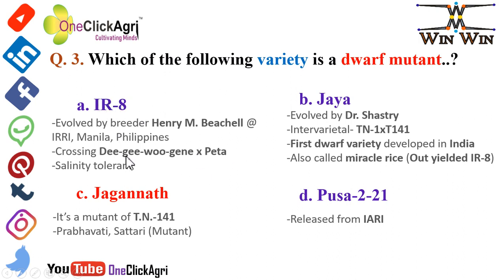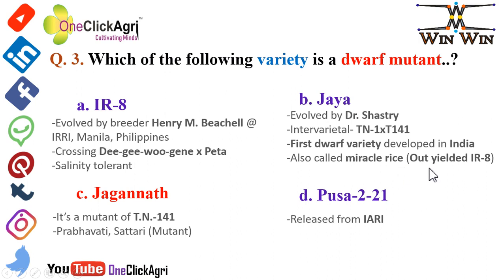IR8 variety of rice is salinity tolerant. The variety Jaya was evolved by Dr. Shastri, an Indian scientist. Jaya is an inter-varietal cross between TN1 into TN141, and it is the first dwarf variety developed in India. It is also known as Miracle Rice because it out-yielded the IR8 variety — please remember this point. And Pusa 221 was released from IARI, New Delhi.